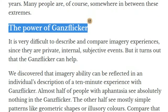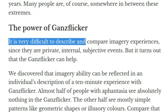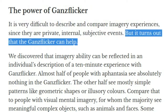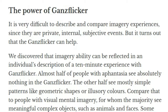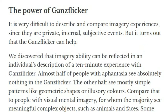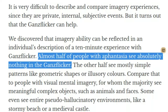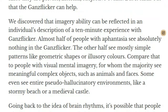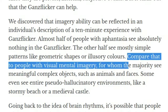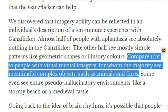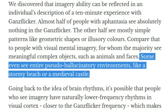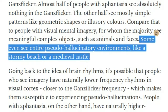The power of GANs flicker: it is very difficult to describe and compare imagery experiences, since they are private, internal, subjective events. But it turns out that the GANs flicker can help. We discovered that imagery ability can be reflected in an individual's description of a 10-minute experience with GANs flicker. Almost half of people with aphantasia see absolutely nothing in the GANs flicker; the other half see mostly simple patterns like geometric shapes or illusory colors. Compare that to people with visual mental imagery, for whom the majority see meaningful complex objects such as animals and faces — some even see entire pseudo-hallucinatory environments, like a stormy beach or a medieval castle.